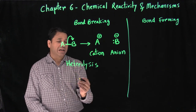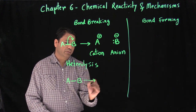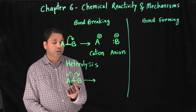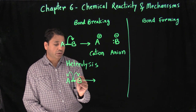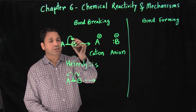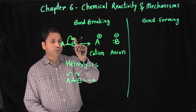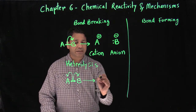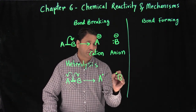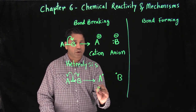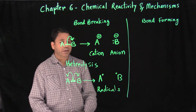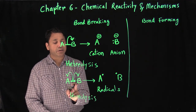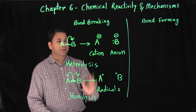The other way is homolysis. In this case, we take the bond and place one electron on each atom — one electron on A and one on B. When we move two electrons we use a full-headed curved arrow, but when we move a single electron we use a half-headed arrow. When you have a single-electron species, these are called radicals — you get two radicals. This is called homolysis: homo means equal, lysis means breaking.